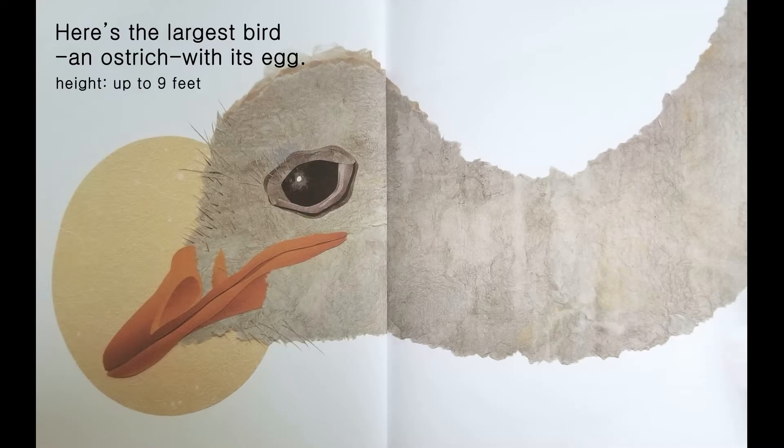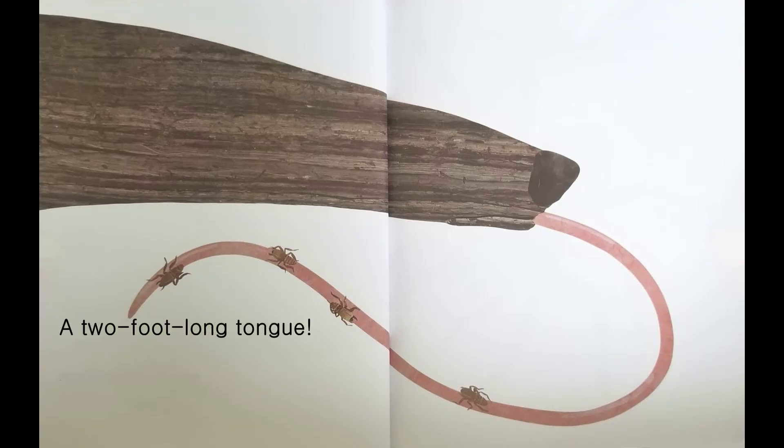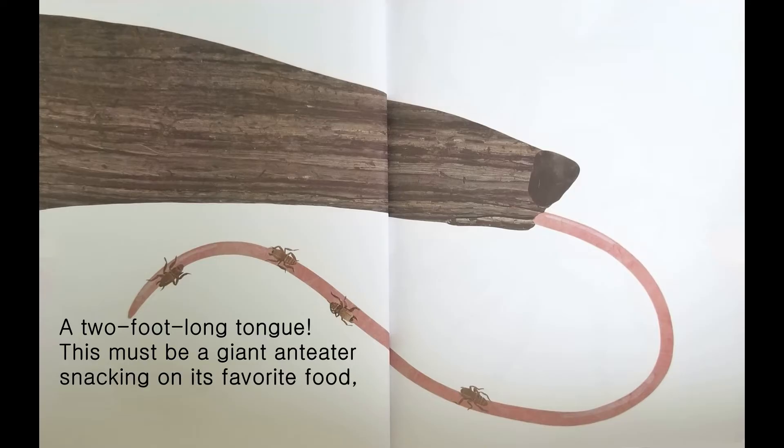A 2-foot-long tongue. This must be a giant anteater snacking on its favorite food, termites. Body and tail 7 feet long. Weight 85 pounds.